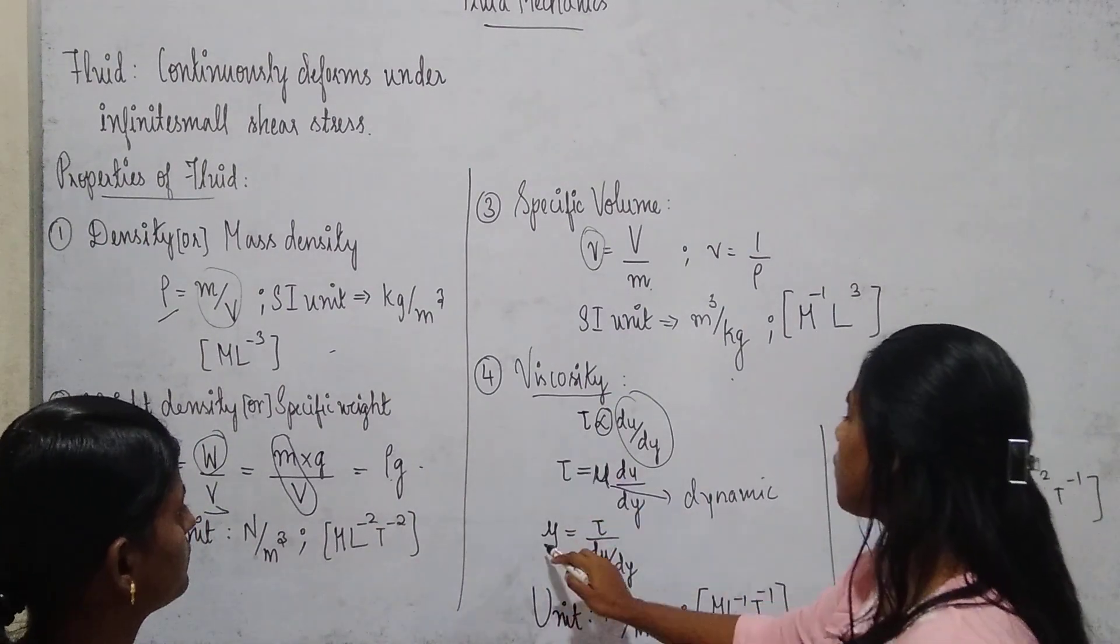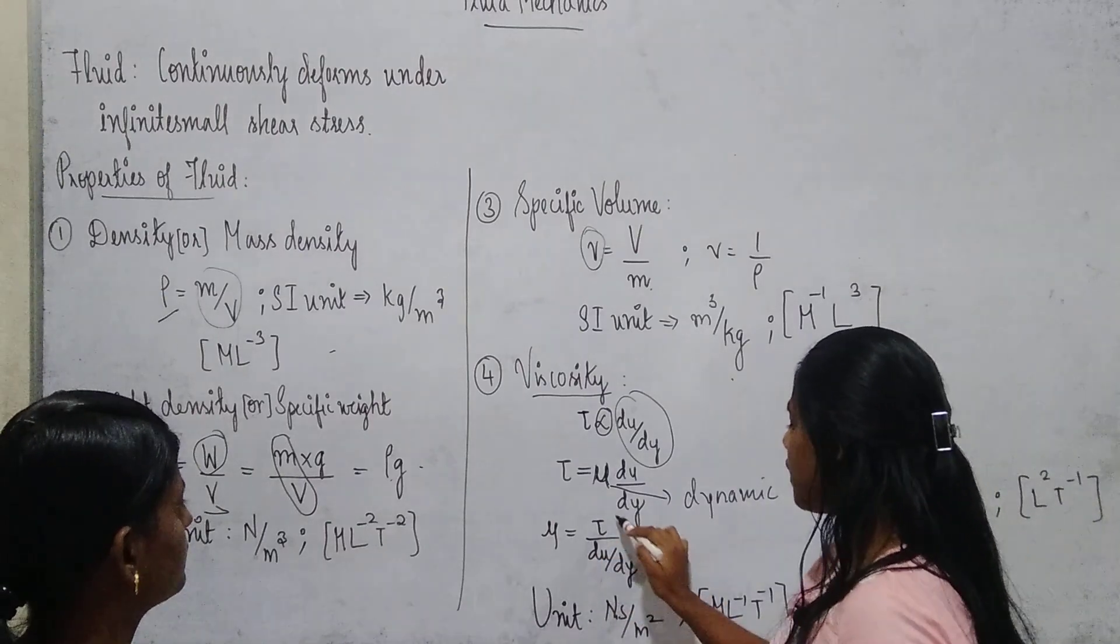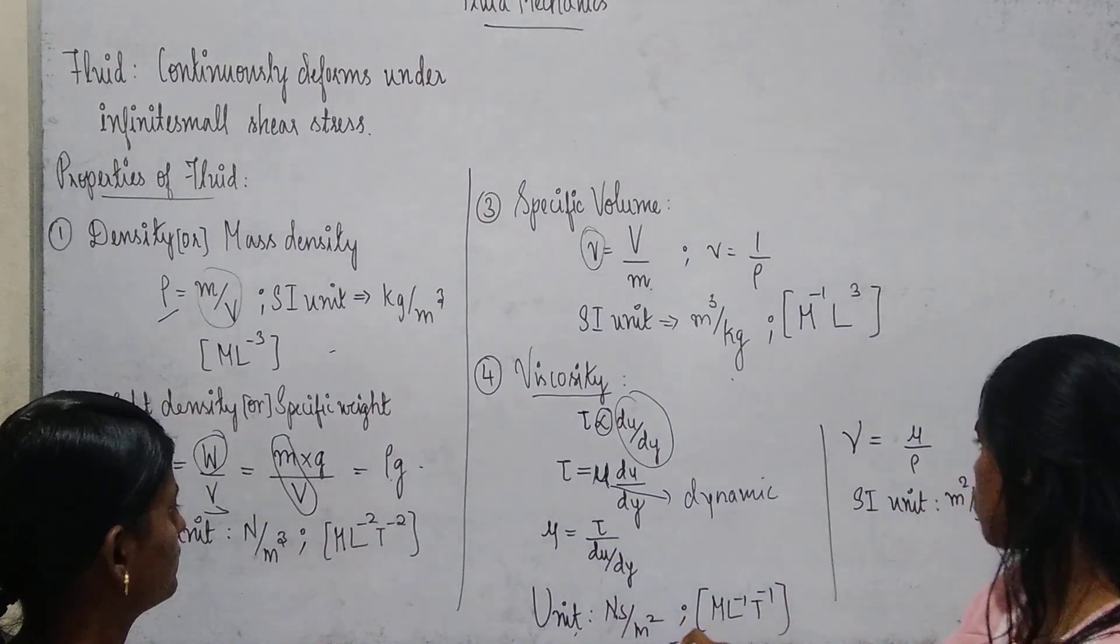Dynamic viscosity is equal to shear stress tau divided by du by dy. And the SI unit is newton second per meter square.